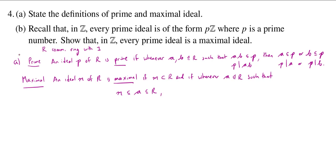then, well, if we want M to be maximal, there shouldn't be such an A. So either A is already M, so A is equal to M, or A is already the entire ring, so A is equal to R. So that's our definition of maximal.